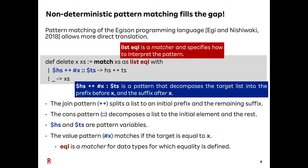Here is the definition of the delete function in EGISON. List equal is an object called a matcher. A matcher specifies how to interpret the pattern. The pattern $hs++x//ts splits the target list into an initial prefix, the next element, and the remaining suffix. The join pattern splits a list into an initial prefix and the remaining suffix. The cons pattern decomposes a list to its initial element. $hs and $ts are pattern variables. $x is called the value pattern and matches if the target is equal to x. As a result, this pattern decomposes the target list into the prefix before x and the suffix after x.